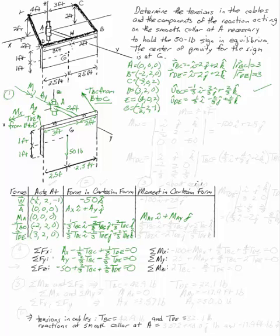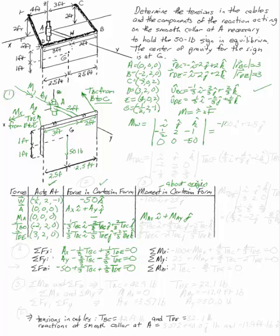I'll take moments about the origin. The moment is M = R × F, where R is the vector from the origin to the point of application. The moment due to W at the origin is the cross product of (-1/2, 2, -1) and (0, 0, -50), which gives -100i + 25j.